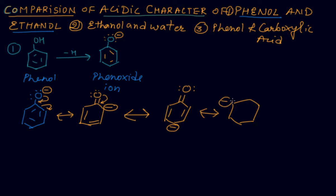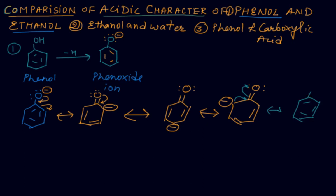Delocalization takes place in the phenoxide ion as well as in phenol itself — this is how it is resonantly stable. In the final step we can return to the starting structure: three double bonds in the benzene ring with the bond going back to oxygen. This shows that phenol is resonating.